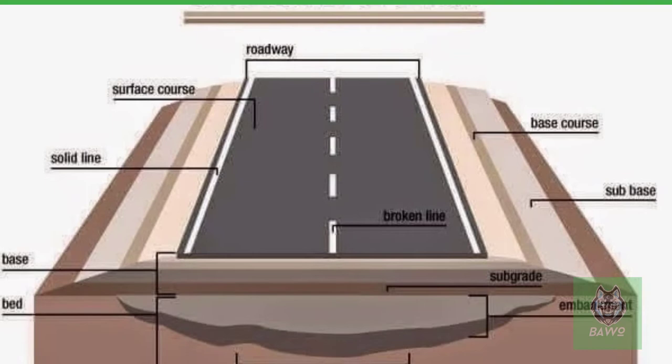4. Subgrade: this is the compacted natural soil immediately below the pavement layers, acting as a foundation for the highway. The top surface of the subgrade is called the formation level. Depending upon the alignment and the nature of the terrain, a roadway may be constructed over an embankment, a cutting, or at nearly the natural ground level, and the formation level must be properly decided to suit these conditions.